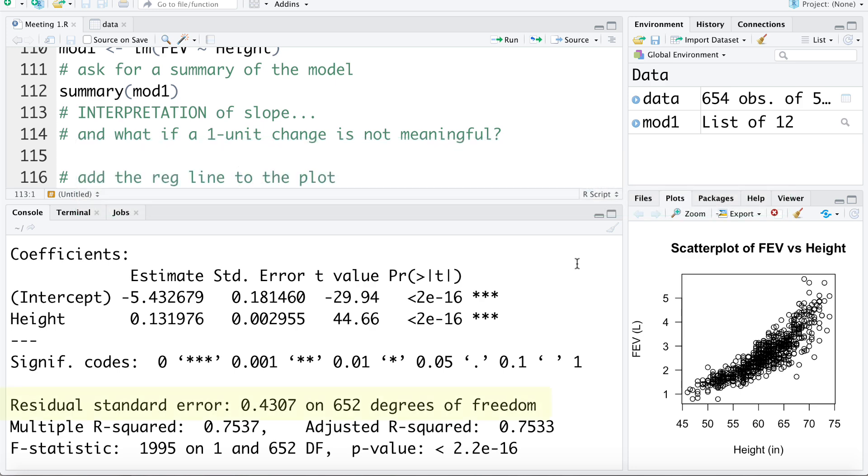We can see the residual standard error of 0.4307. It's not quite correct mathematically to say this, but it's close enough to think of it that way: this is the average error or the average residual. On average, how far individuals' FEV is from the regression line. We can see the multiple R-squared of 0.7537. This has the interpretation as the percentage of variability in Y explained by our model. So about 75 percent of variability in FEV can be explained by height.